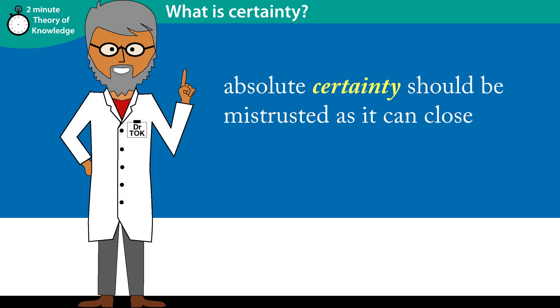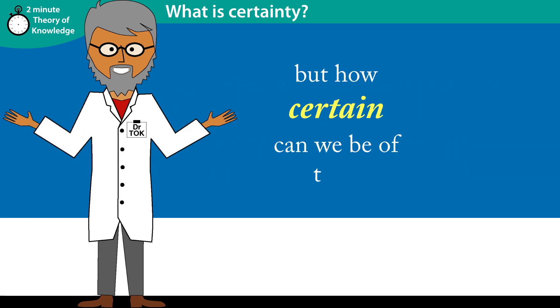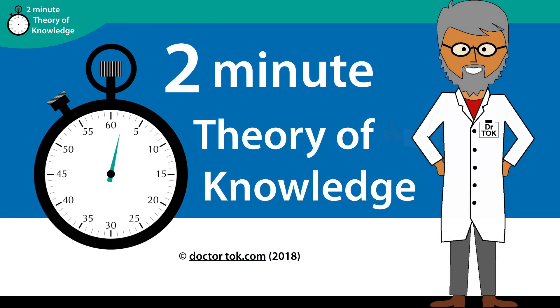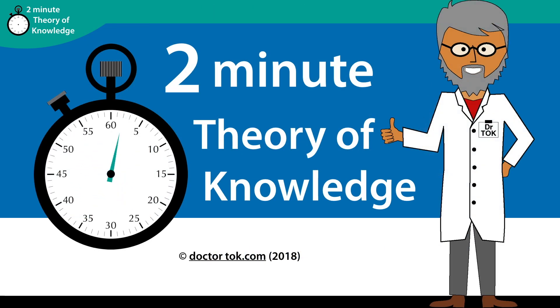Absolute certainty should be mistrusted, as it can close our minds and take away our objectivity. But how certain can we be of this? What do you think? Thanks for watching this episode of Two Minute Theory of Knowledge.